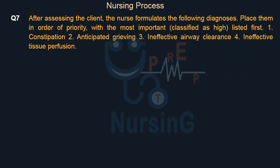After assessing the client, the nurse formulates the following diagnoses. Place them in order of priority, with the most important classified as high, listed first: 1. Constipation, 2. Anticipated grieving, 3. Ineffective airway clearance, 4. Ineffective tissue perfusion. Option A: 3, 4, 2, 1. Option B: 4, 3, 2, 1.